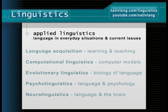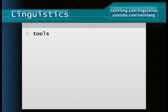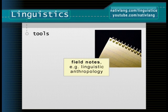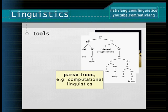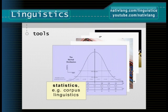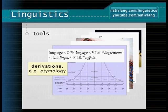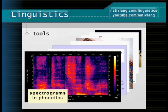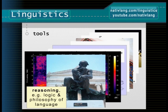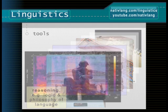Let's take one last angle: what tools do we use to study human language? These include field notes, grammar books, parse trees, dusty manuscripts, statistical models and data sets, derivations, spectrograms, and just plain mental analysis and questioning, to mention but a few linguistic tools drawn in random order.